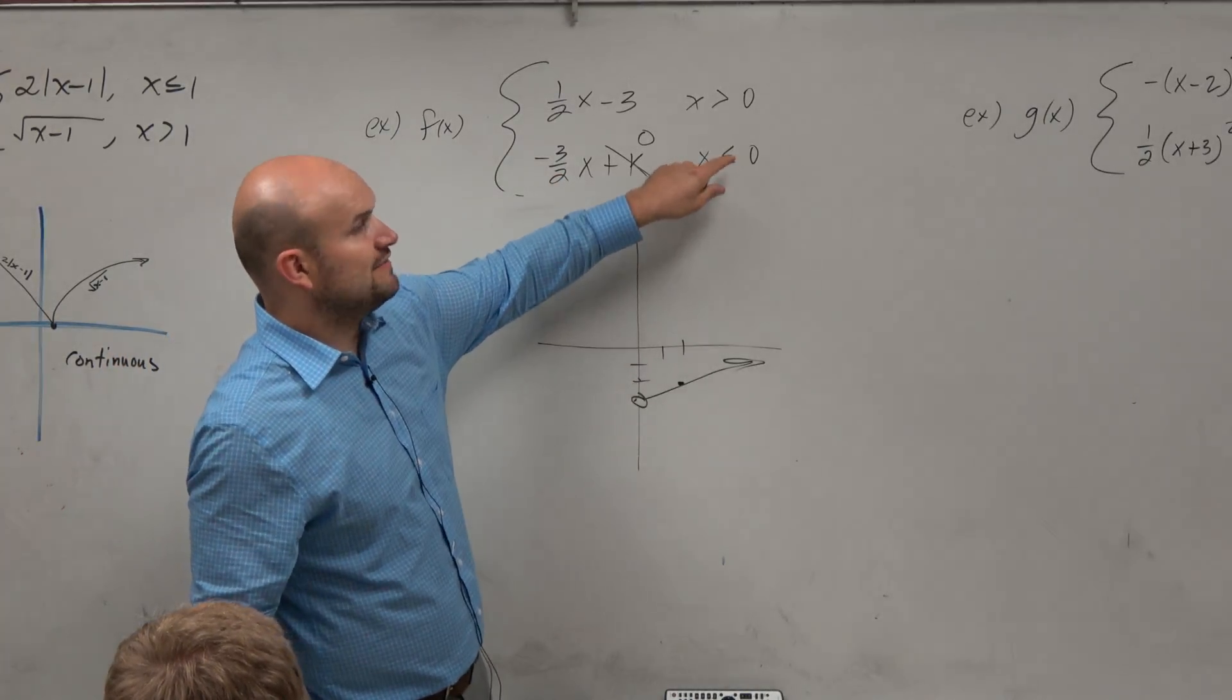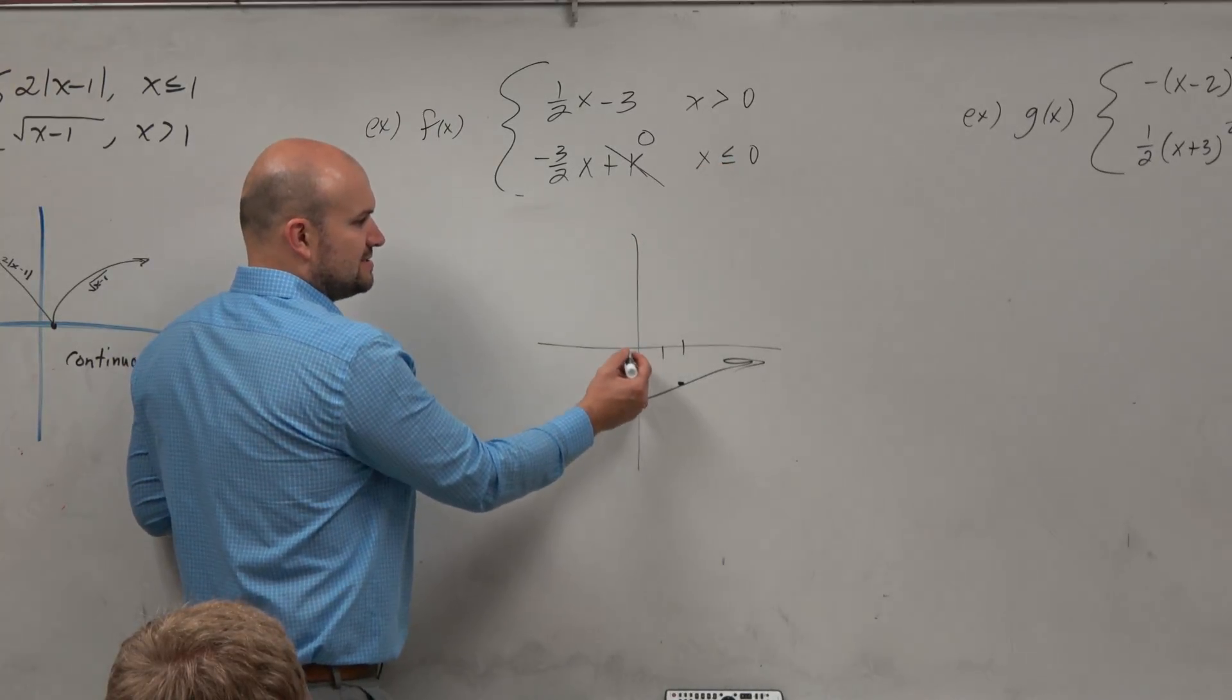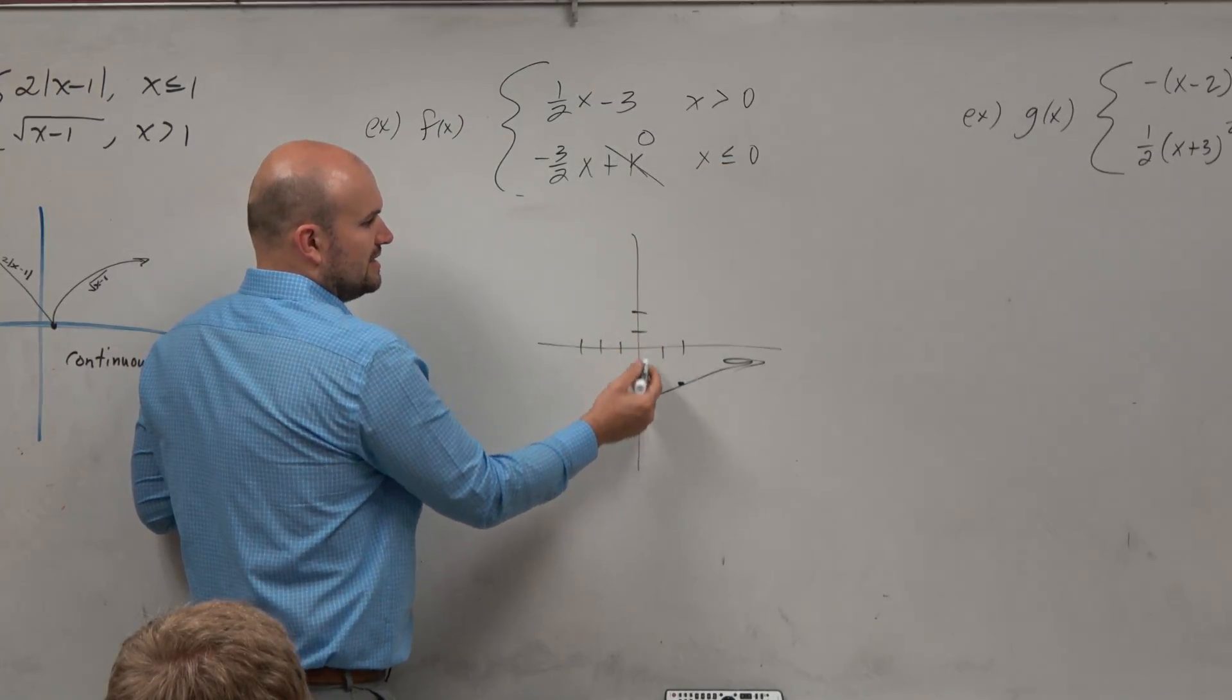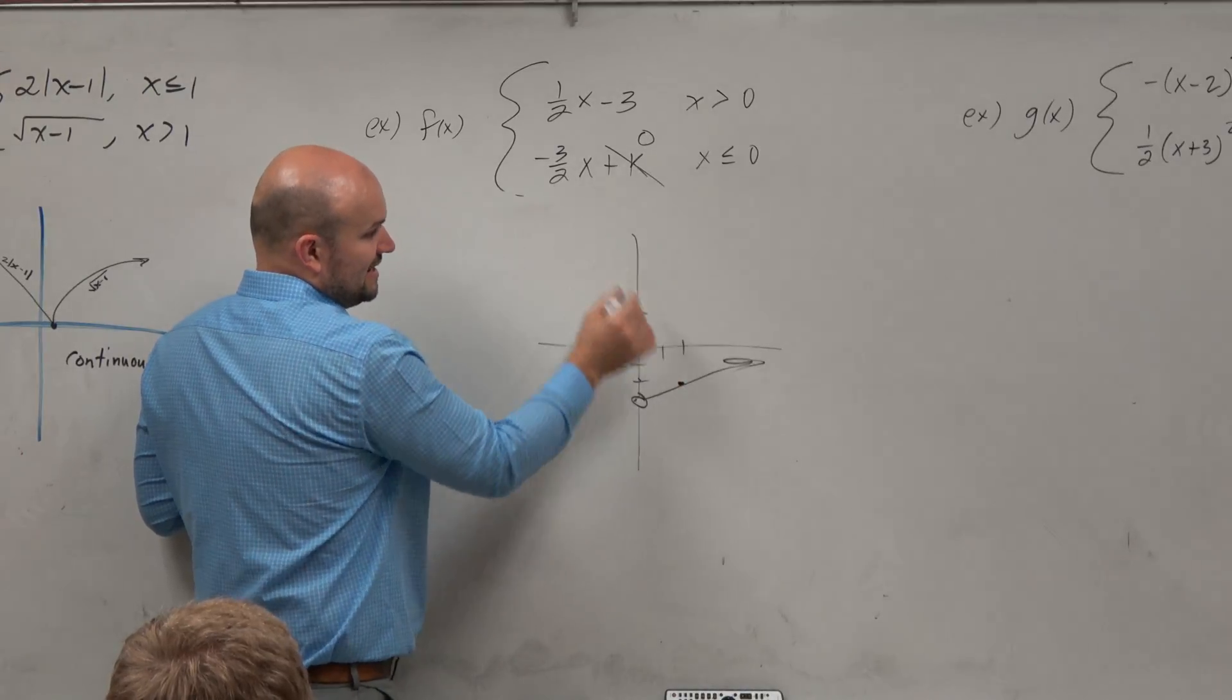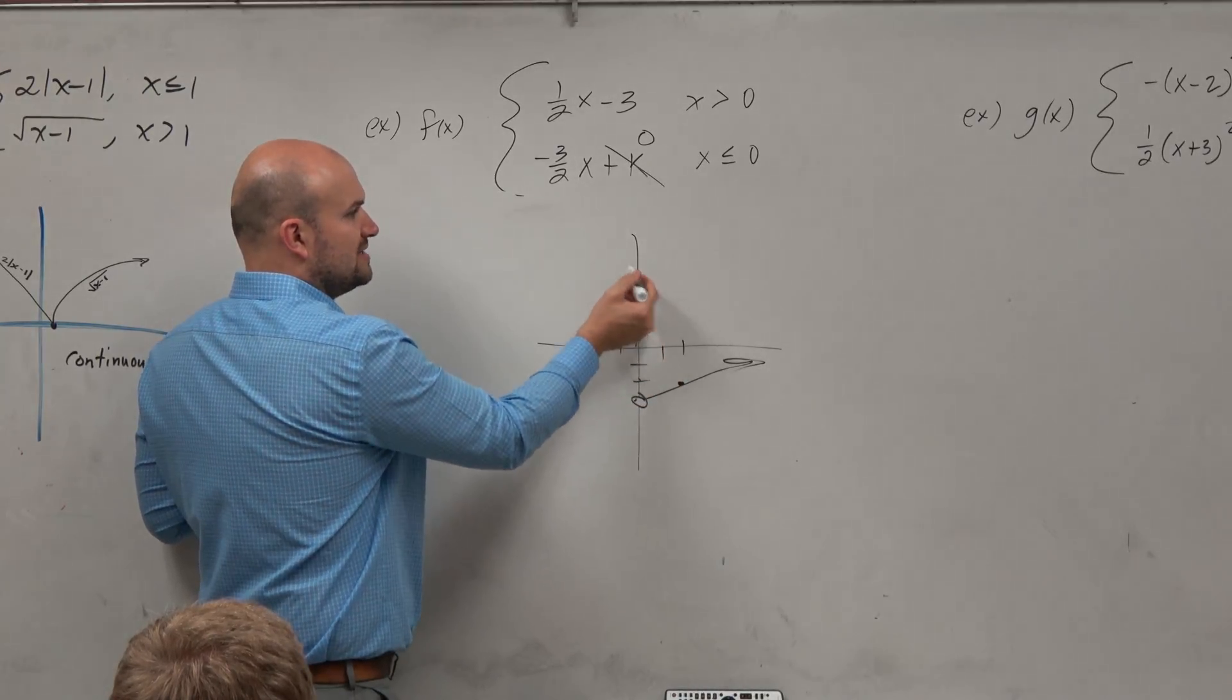And it's only going to be graphing it for values that are less than or equal to 0. So that means instead of going down and to the right, or it's negative, right? So therefore, I'd have to go up and to the left.